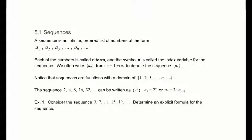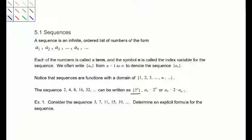For instance, consider the sequence 2, 4, 8, 16, 32. You can write that as 2 to the n. So that has two forms we could write. We say a sub n equals 2 to the n, or a sub n equals 2 times a sub n minus 1. That is a recursive form where the current term is 2 times the previous term — we are multiplying by 2 each time.